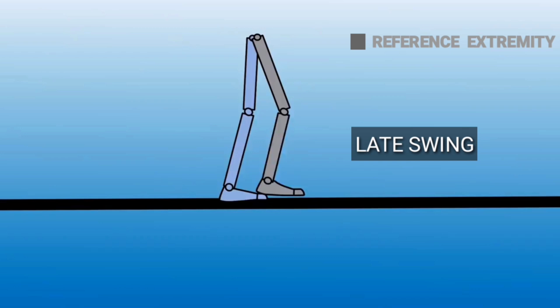The late swing phase occurs between the end of the mid swing phase and the beginning of the heel strike. This late swing phase occurs between 85 to 100 percent of the gait cycle.